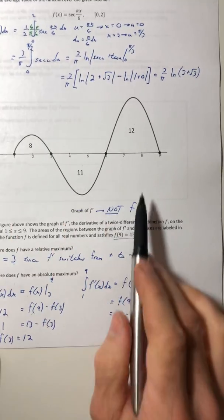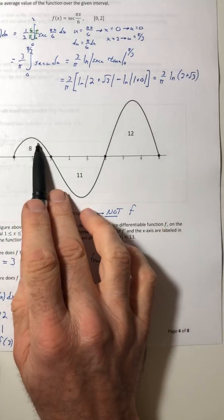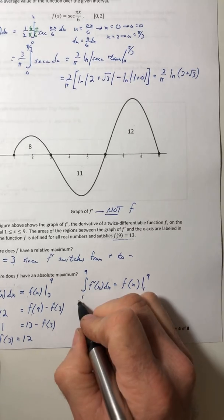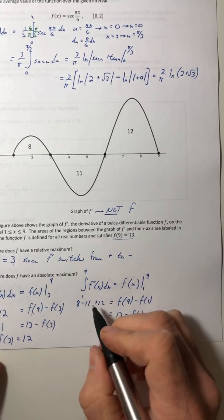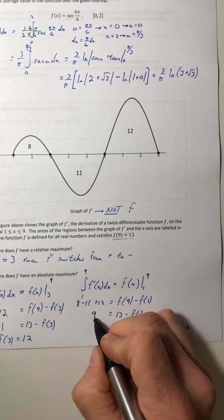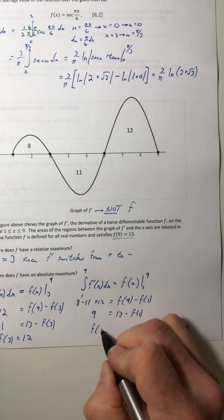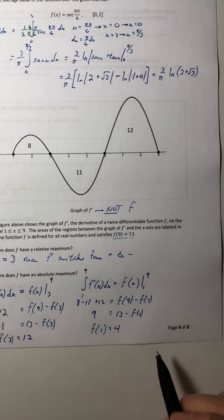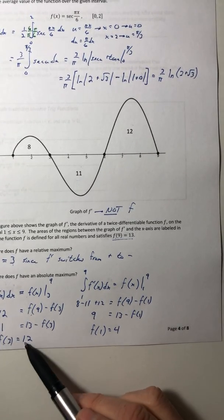Back on the left side, just look at the areas under the curves. So I'm going from 1 to 9, so all the whole way. So I have an 8, a negative 11, and a 12. So if I combine all of that I get 9. And then if I solve for this f of 1, I end up with 4. So I came out with f of 3 is 12, f of 1 is 4.